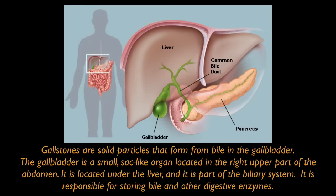Gallstones are solid particles that form from bile in the gallbladder. The gallbladder is a small, sac-like organ located in the right upper part of the abdomen, right under the liver, and it is part of the biliary system.